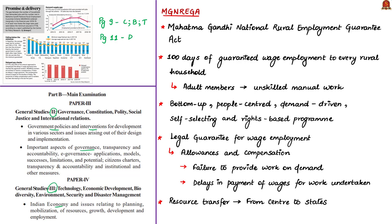The mandate of the MGNREGA scheme is to provide at least 100 days of guaranteed wage employment in a financial year to every rural household whose adult members volunteer to do unskilled manual work. MGNREGA is a bottom-up, people-centred, demand-driven, self-selecting and rights-based program.